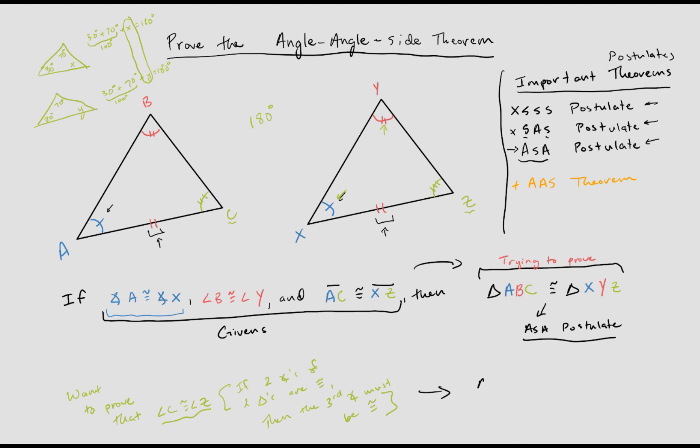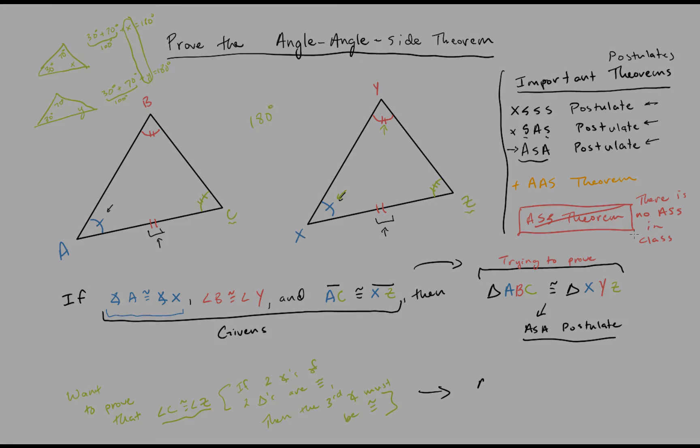I suppose that this is as good a time as any to mention one thing. You notice this has pretty much every combination here, except for angle side side, there's a reason for that. This does not exist. It is not a way to prove that two triangles are congruent. A quick, easy way of memorizing this is there is no ass in class. A little silly, but I don't know. It's always stuck in my brain.